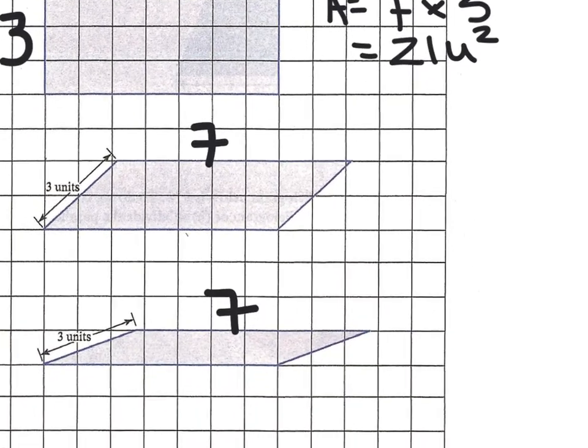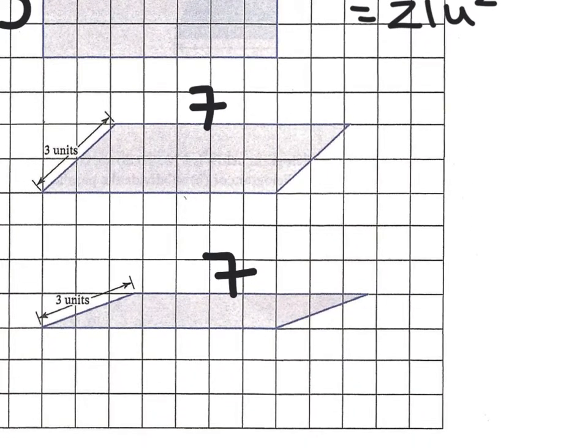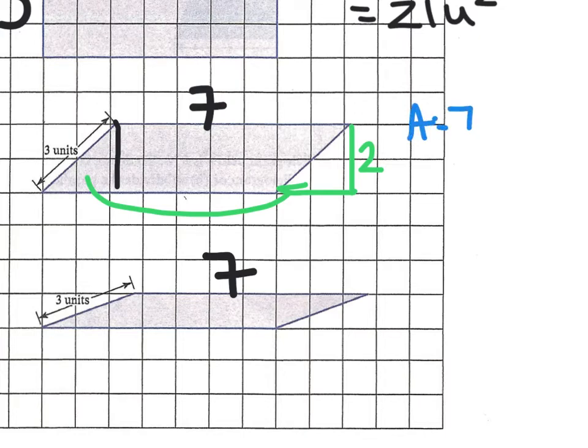Now for the next guy we're going to have to move some part of them. So let's go ahead and cut this off here and take that and move it over to here. When you move that you now see that you have a rectangle that is seven by two so the area is seven by two which is 14 units squared.